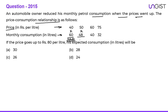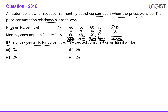When the price became 50, he reduced his consumption to 48 — his expenditure is 2400 again. When the price went up to 60 rupees, he reduced his consumption to 40 litres, and his expenditure is still 2400 rupees. So it means he is trying to maintain his expenditure every month. Now the question is: if the price goes up to 80 rupees, his expenditure will still be 2400, so 80 into 30 is 2400. His expected consumption will be 30 litres. It is a simple question based on percentage compensation.